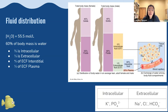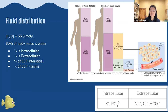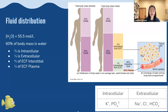Fluid distribution: 60% of our body mass is water. Two thirds of that water is intracellular fluid, and one third is extracellular fluid. Of the extracellular fluid, 80% is interstitial fluid sitting outside the cells and 20% is inside the blood vessels. Inside cells we have higher concentrations of potassium and PO4 2−, while outside the cells we have higher concentrations of other ions like sodium.